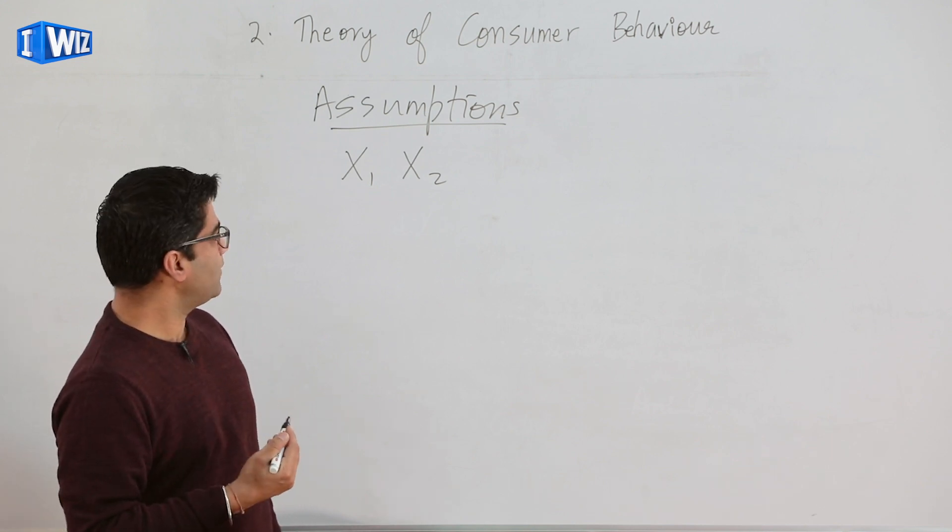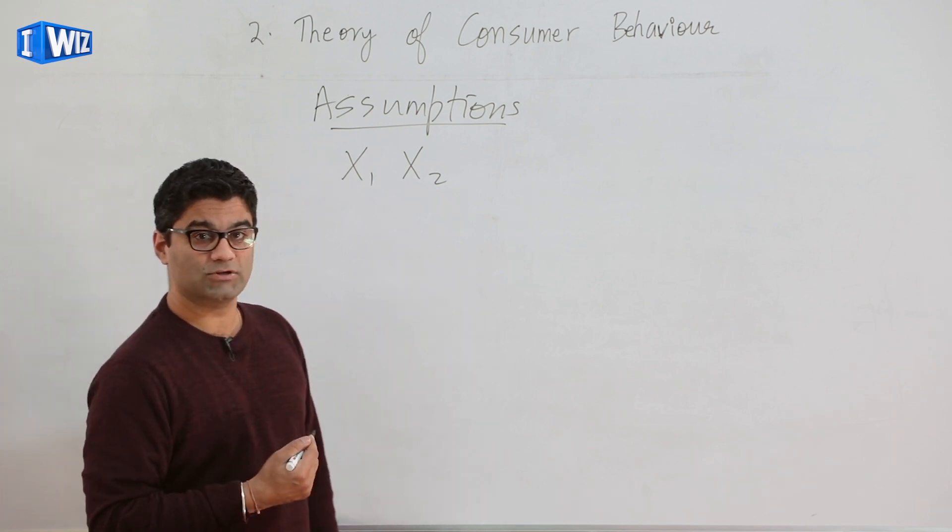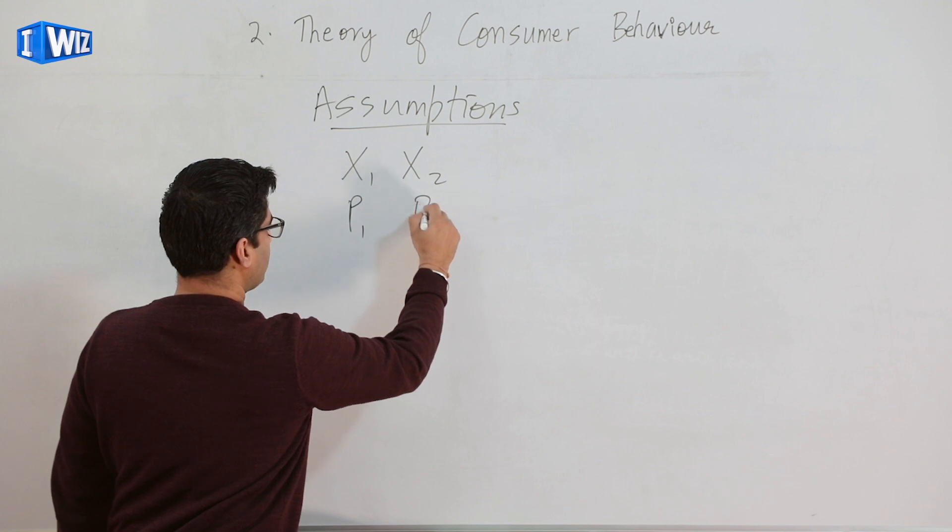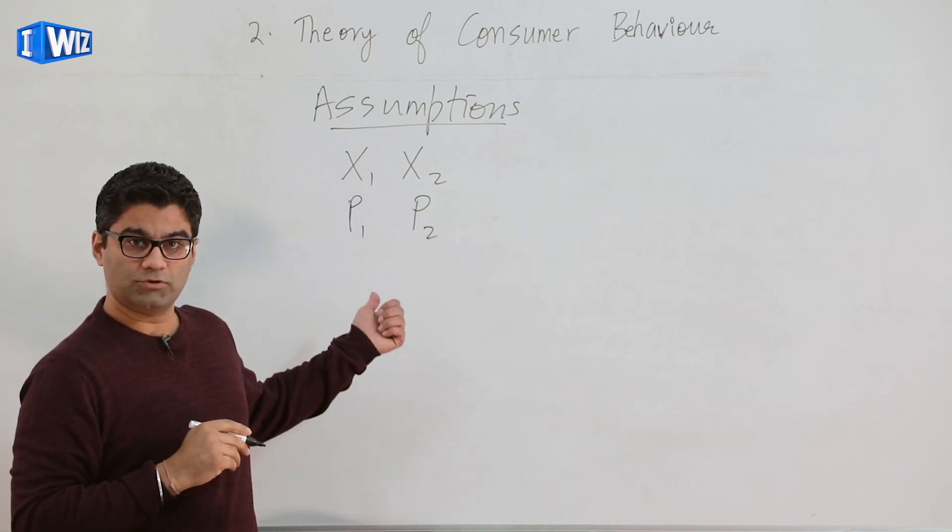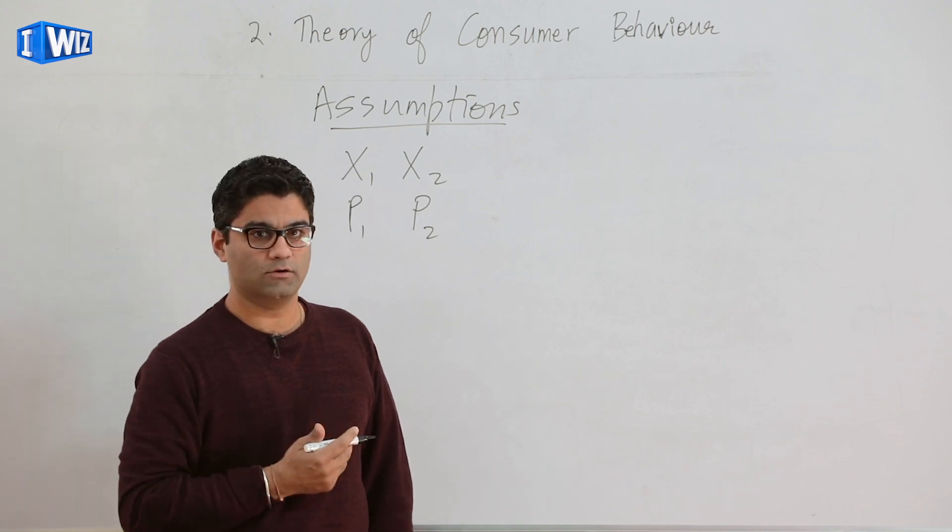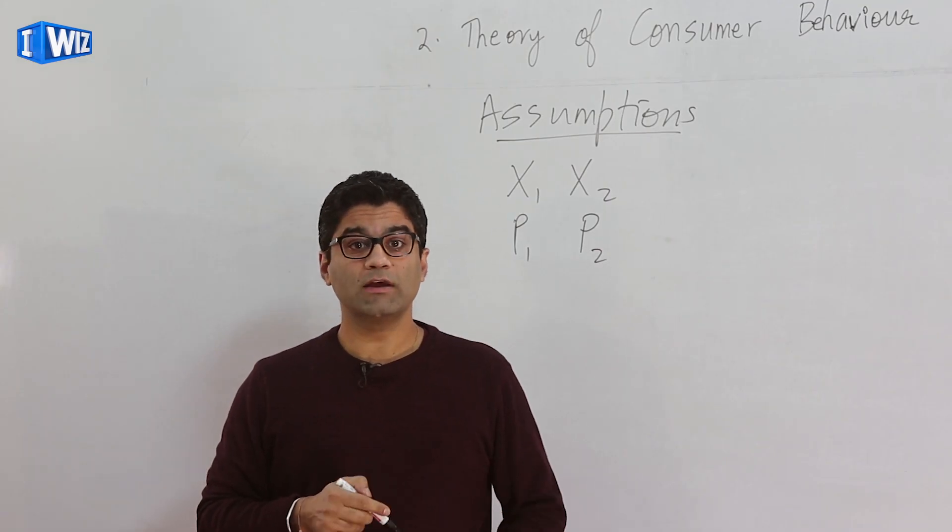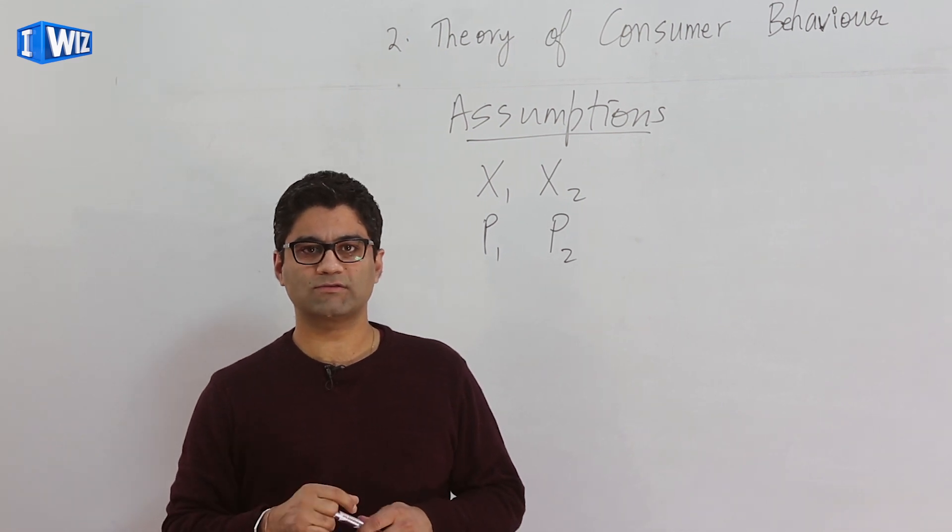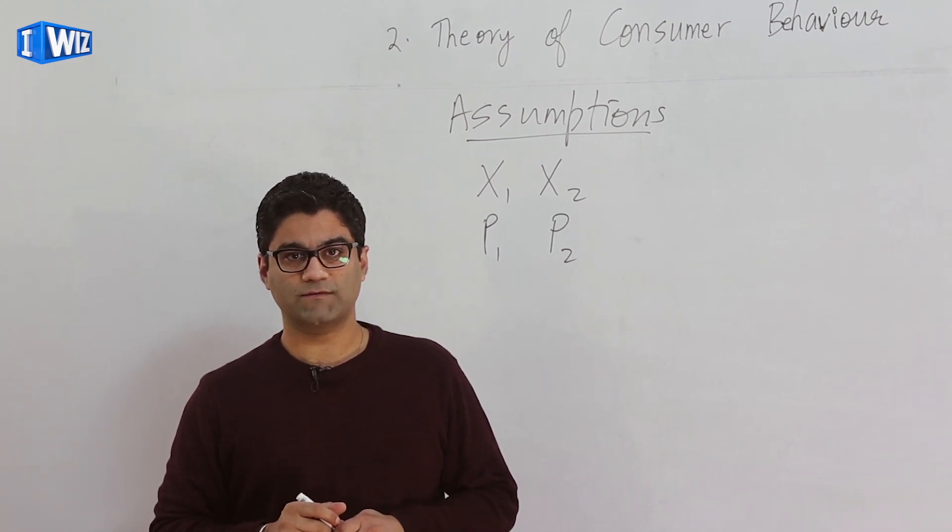Now obviously one variable that's very important when you're deciding how much of good one or good two to buy are prices of good one and prices of good two. So both of those, the subscript one and two correspond to good one and good two. Which one do you think is another very important variable that will determine how much of the combinations of the two goods you will buy?